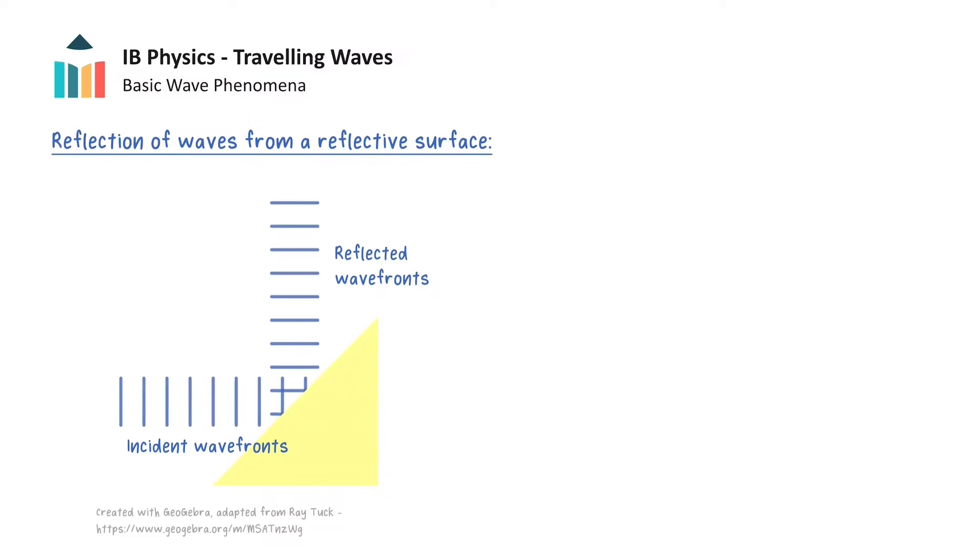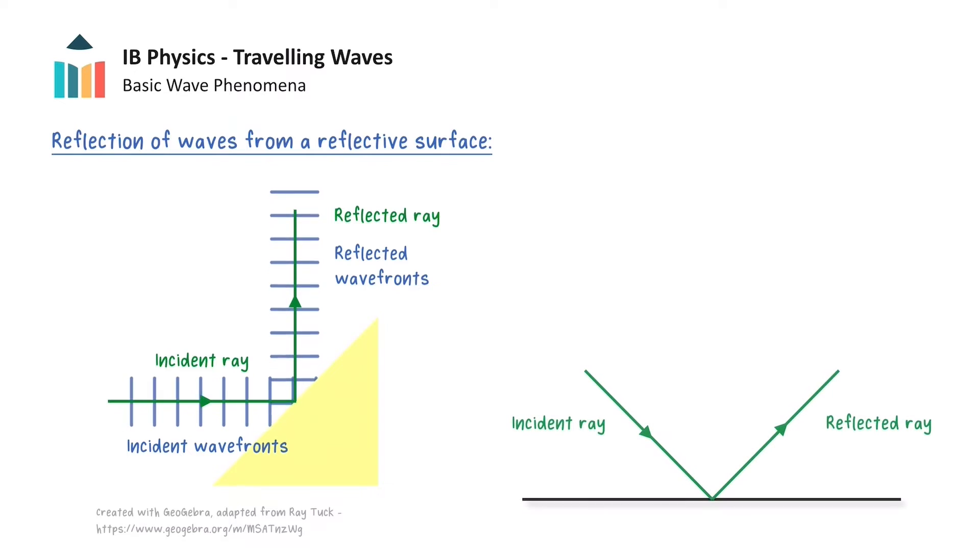The rays for the wave can also be drawn, which are known as the incident and reflected ray respectively. To explore this behaviour in more detail, we will simplify this animation to the following ray diagram.